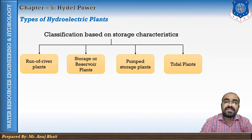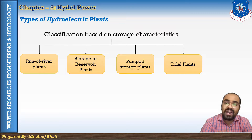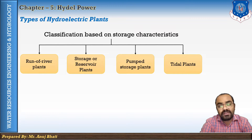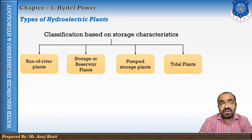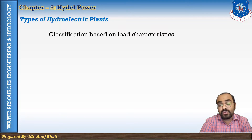The fourth type is tidal plants. Tidal plants are designed to make use of high tides occurring in the sea for the generation of power. Tidal plants do not involve any storage of water. At the time of high tide, water is stored in a basin at a high level and can be made to fall into the sea during low tide through turbines to produce tidal power.